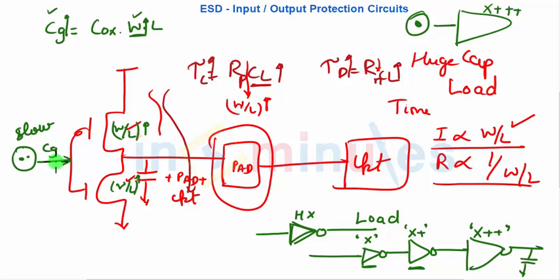In summary for output circuits: the output needs to drive a huge external load; with tau equals R times C, delay increases; to reduce delay we increase W/L of the MOSFET, but that increases gate capacitance and slows down the driving stage. So instead of a single huge driver, we use driver chains where each stage's W/L is greater than the previous, distributing capacitance uniformly. The optimal number of stages can be determined through logical effort. Stay tuned for further clips — thank you very much.